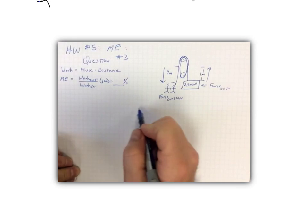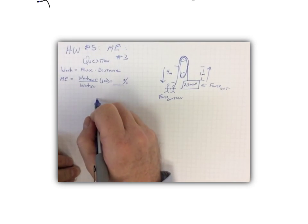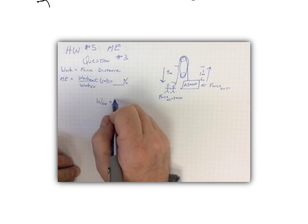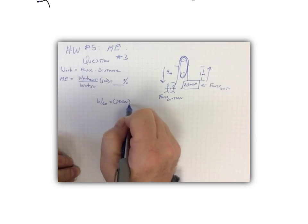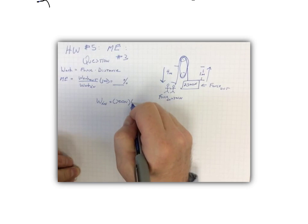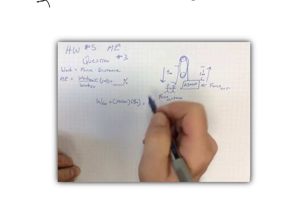So we need to calculate our work in. Work in: we know our force in was 700 newtons, that's the people pulling on the rope. We know the rope's distance it will move is four meters. Four times 700 would be 2,800 joules of input force.